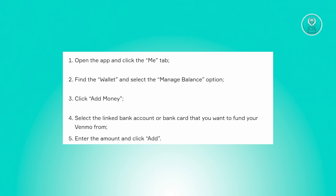Click on add money from the options provided and choose the bank account or bank card that you have linked to Venmo for funding. Input the desired amount and then finalize the process by clicking on the add button and you should be good.